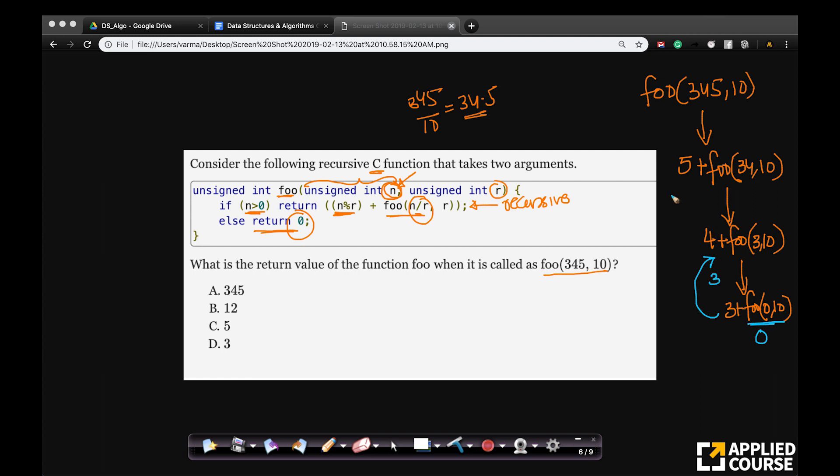Now you do 4 plus 3, 7. So 7 is returned here. 7 plus 5, 12. So what is returned here? 12. So the output of this function is simply 12.